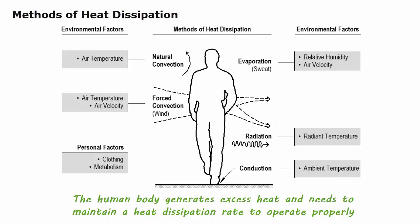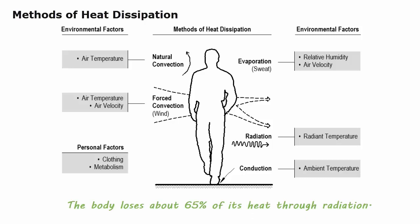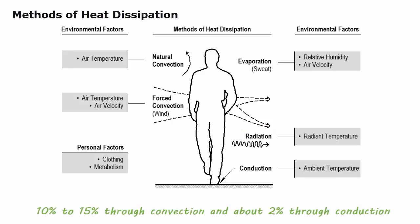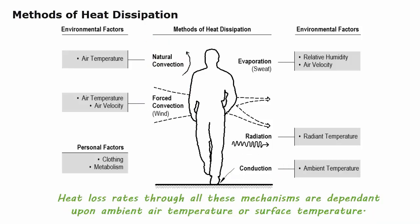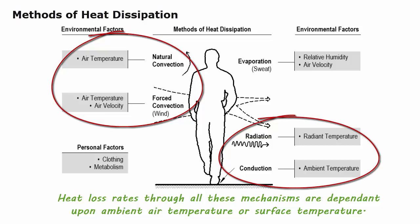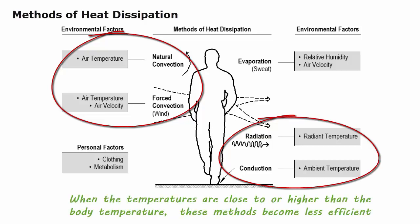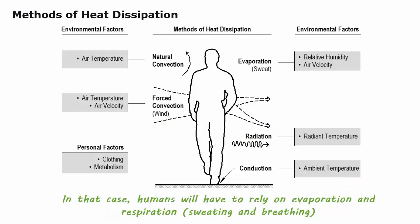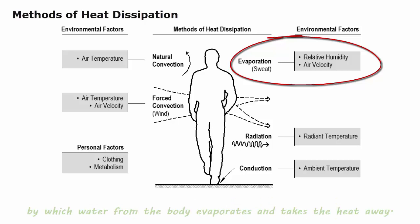The human body generates excess heat and needs to maintain a heat dissipation rate to operate properly. The body loses about 65% of its heat through radiation, 10 to 15% through convection, and about 2% through conduction. Heat loss rates through all these mechanisms are dependent upon ambient air temperature or surface temperature. When temperatures are close to or higher than body temperature, these methods become less efficient. In that case, humans will have to rely on evaporation and respiration — sweating and breathing — by which water from the body evaporates and takes the heat away.